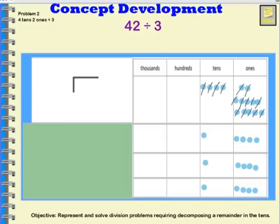So now my group has one ten and one, two, three, four ones. So does this group and this group. So when I divide 42 divided by three, I get one ten and four ones.